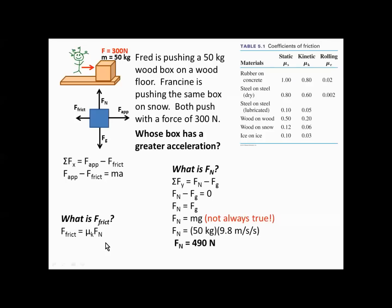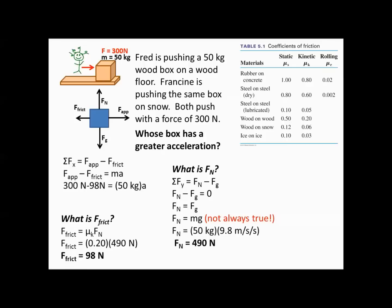Now using the normal force and the coefficient of kinetic friction, we find the force of friction. Fred has a wood box on a wood floor — wood on wood kinetic coefficient is 0.2. That gives us a force of friction of 98 newtons. Taking that back to find the acceleration: applied force 300 minus friction 98, divided by mass 50, gives Fred an acceleration of 4.04 meters per second squared.